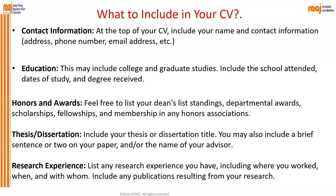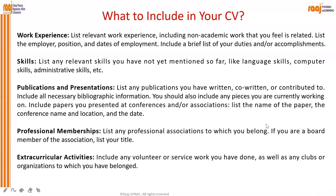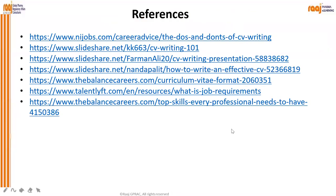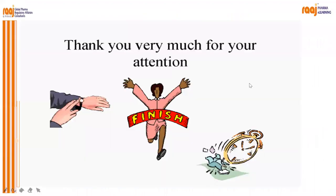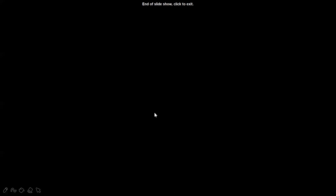In short, a CV should include: contact information, education, honors and awards, thesis or dissertation, research experience, work experience, skills, publications and presentations, professional memberships if any, and extracurricular activities. That covers everything about writing an effective CV. We will now move forward to the next session on interview techniques.